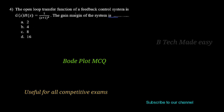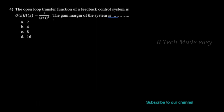The open-loop transfer function of a feedback control system is G(s)H(s) = 1/(s+1)³. You have to find out the gain margin of the system. The options are: first option is 2, second option is 4, third option is 8, and last option is 16.